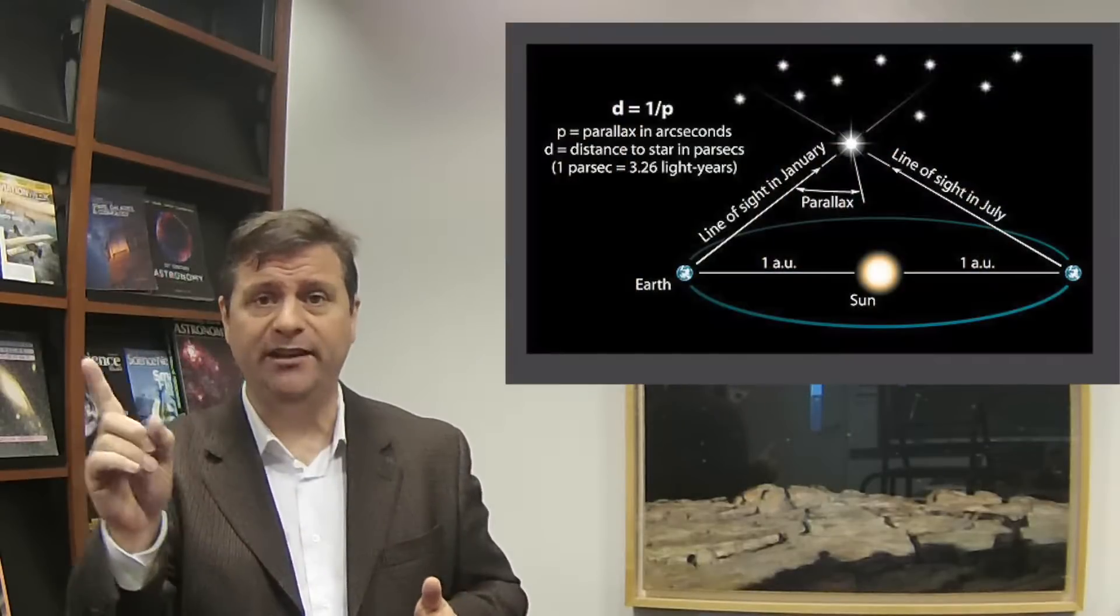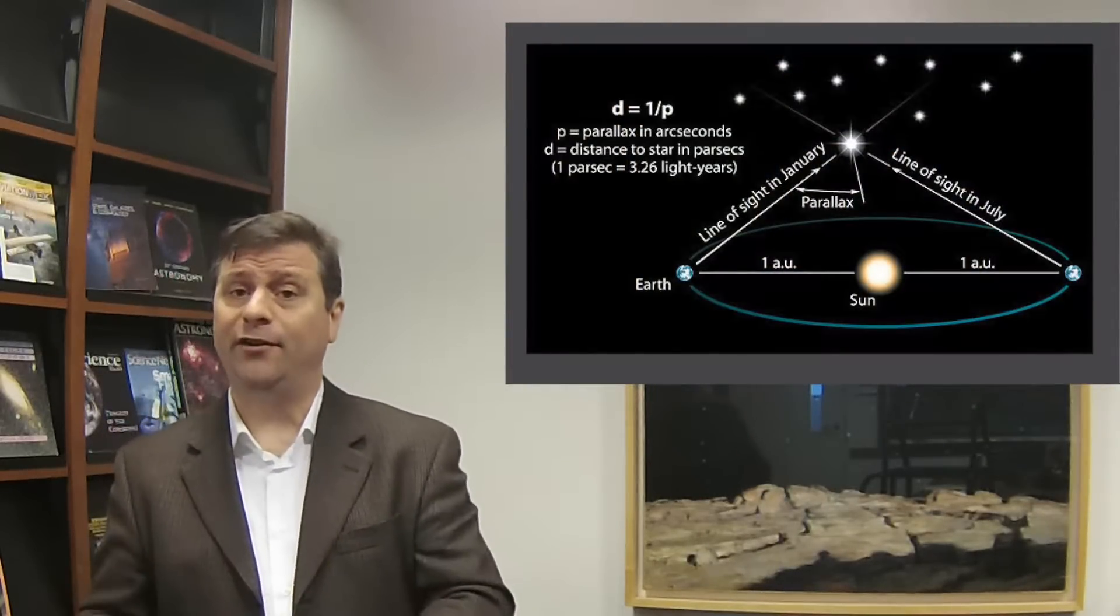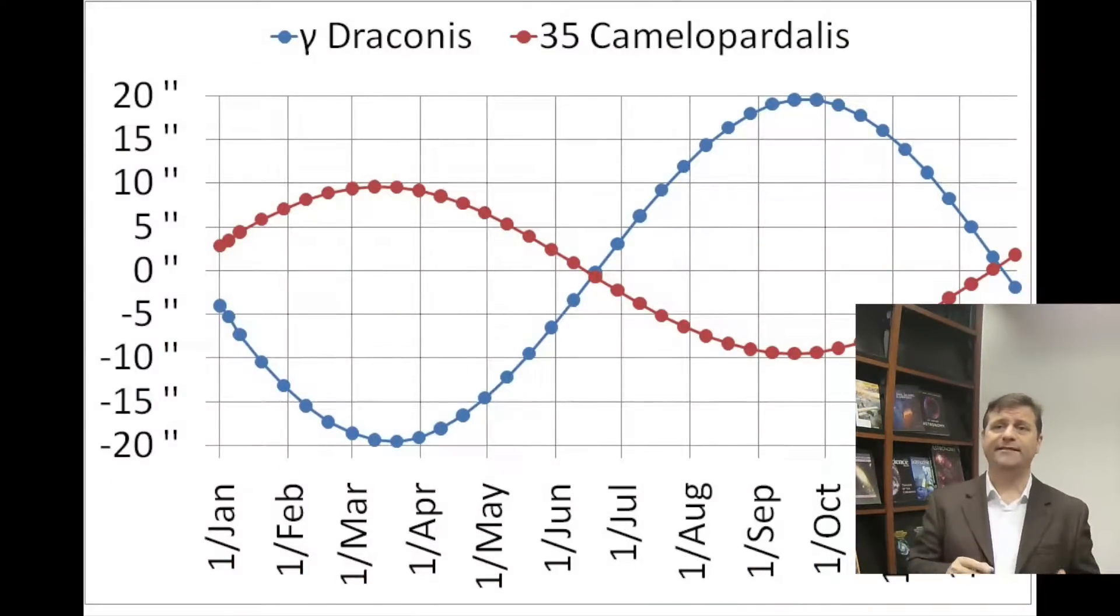He did not find the parallax. However, he found something else that was even stranger. Because he was trying to find parallax, he was trying to find the annual motion, the annual change of the position of a star as the Earth was going around. Every star should have the same kind of parallax motion if it's in the same direction of the sky. But what he found was that Gamma Draconis had this very strange motion.